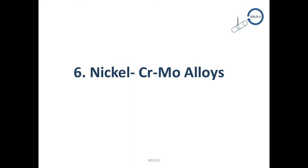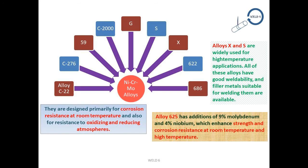Nickel-chromium-molybdenum alloys: the principal alloys are C22, C276, 59, C2000, G, S, 622, X and 686. They are designed primarily for corrosion resistance at room temperature and also for resistance to oxidizing and reducing atmospheres. Alloy 625 has additions of 9% molybdenum and 4% niobium which enhance strength and corrosion resistance at room temperature and high temperature. Alloys X and S are widely used for high-temperature applications. All these alloys have good weldability and suitable filler metals are available.